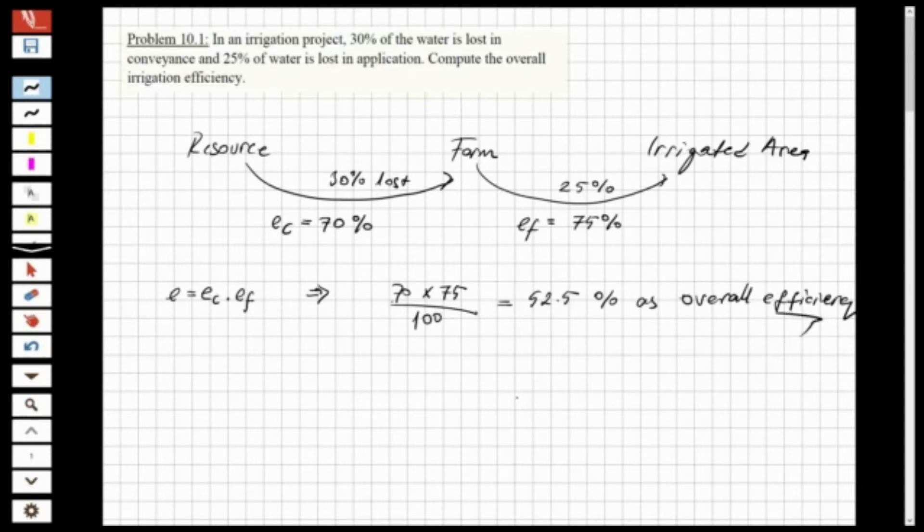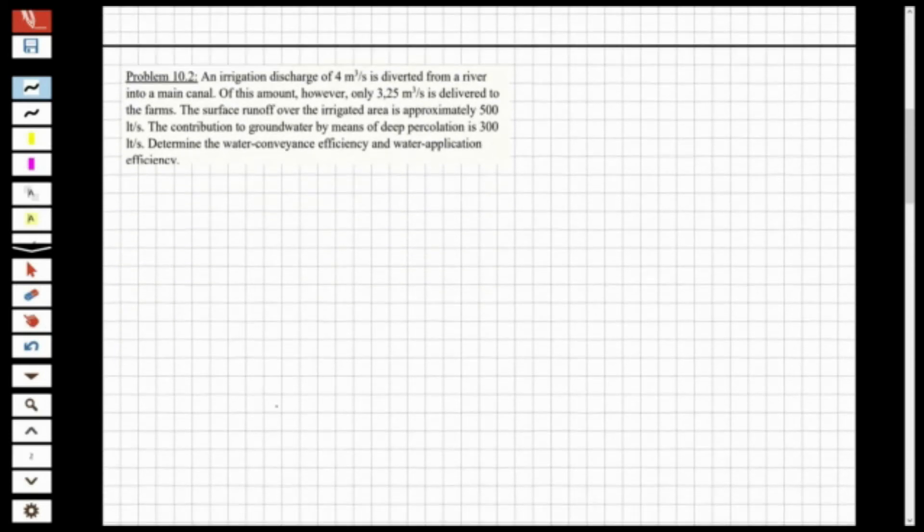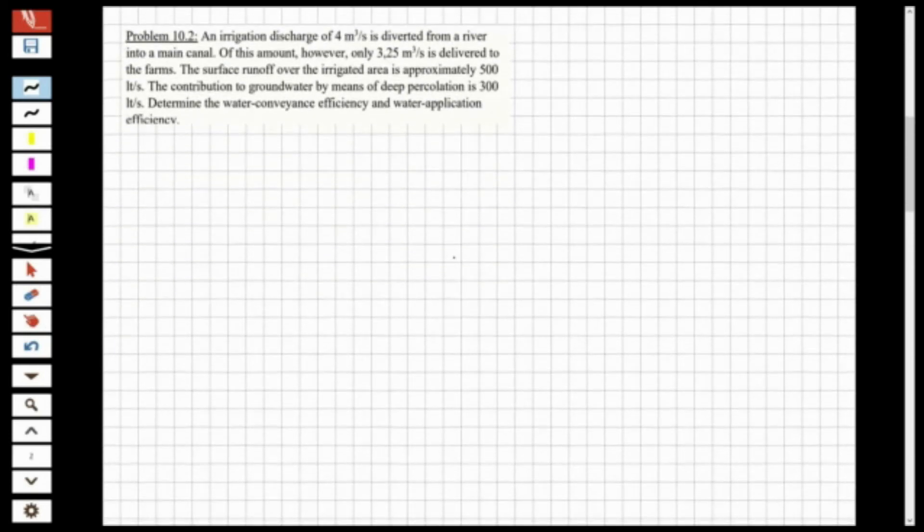Now the first question is solved, let's solve the second question. For the second question it's nearly the same but we have to make some conversions. An irrigation discharge of 4 meter cubic per second is diverted from a river into a main canal, so it means this one I have as resource, and this is farm, and this is irrigated area again. I'm writing like that to make it understand better, how we use the water and where it comes.